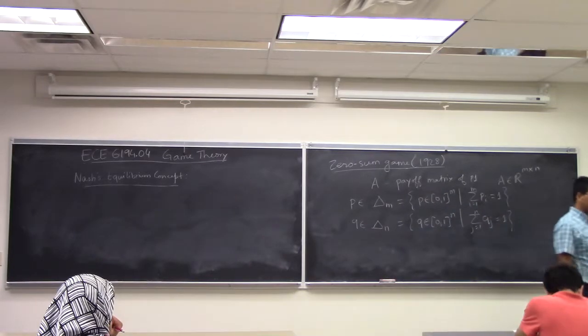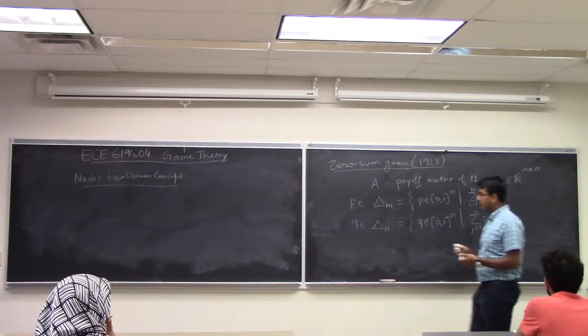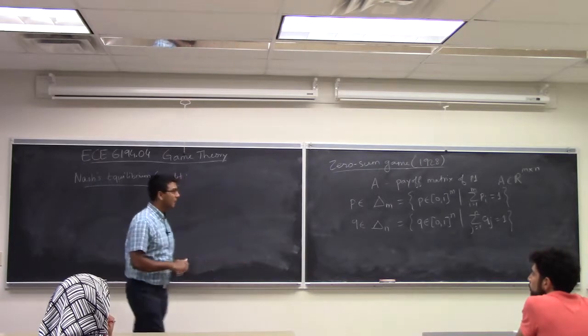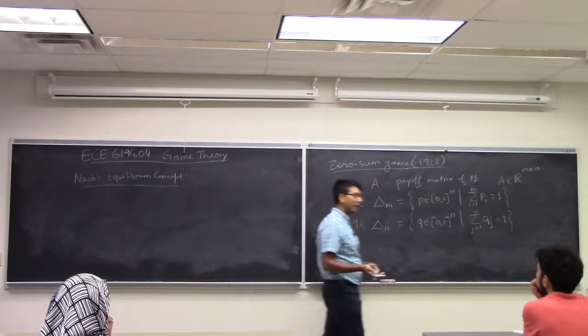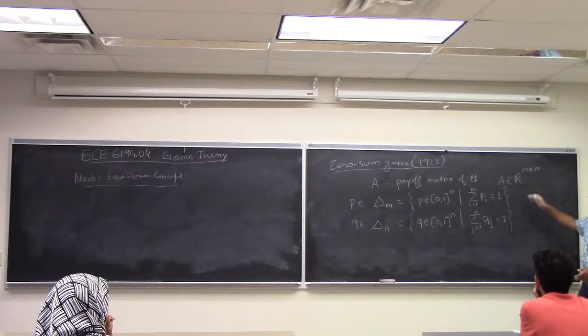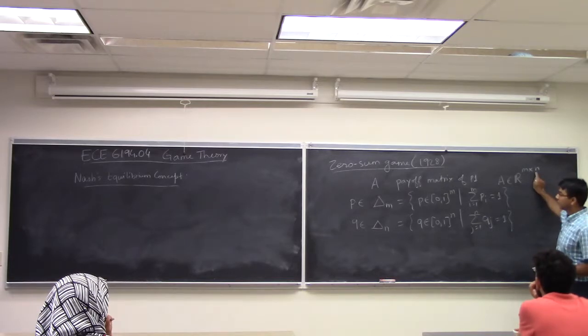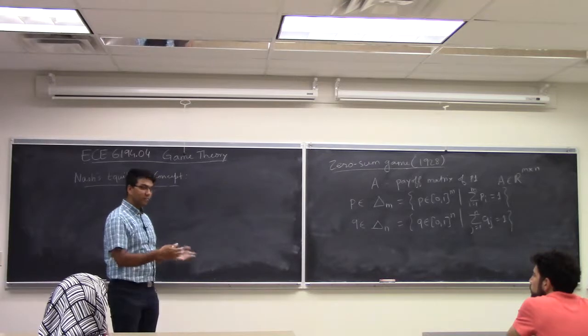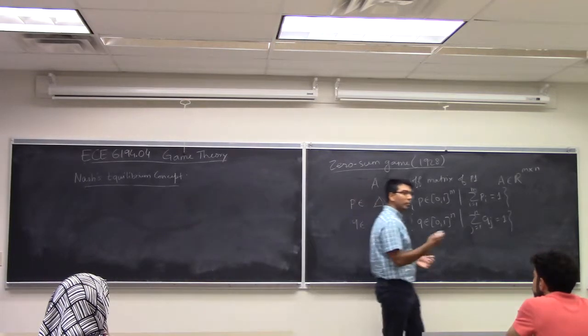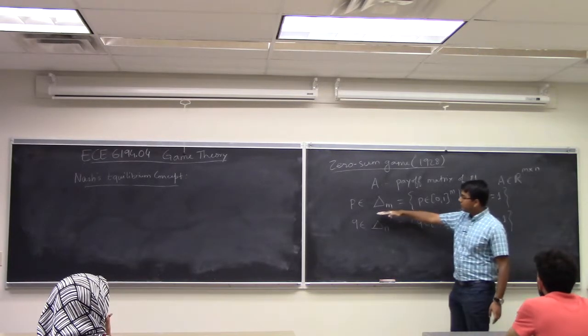So we saw how in the battle of sexes there was no pure strategy that the player could play, there was no action that the player could take without hurting the other player, so the ideal option was to mix. To play action 1 with certain probability and action 2 with certain other probability. So now I am going to a more general zero sum game where player 1 has m actions, player 2 has n actions and the payoff matrix of player 1 is A, and what players have decided is to mix their actions. And this is a very philosophical concept of mixing action which means you will toss and you will pick an action that you want to play.